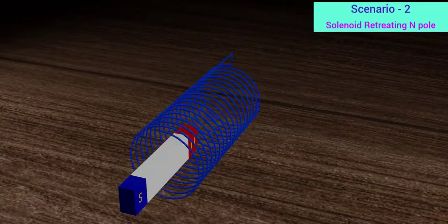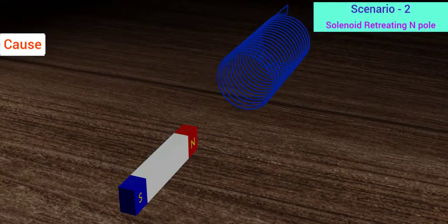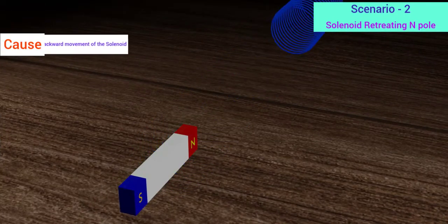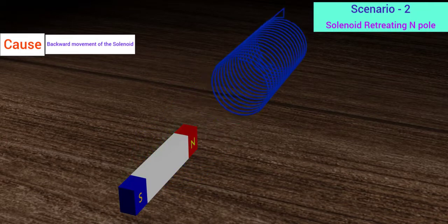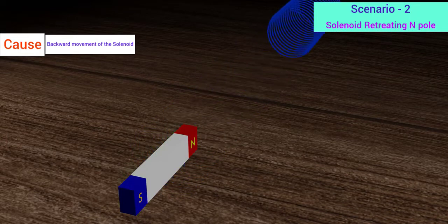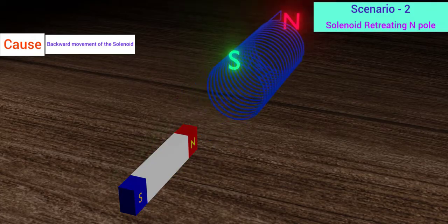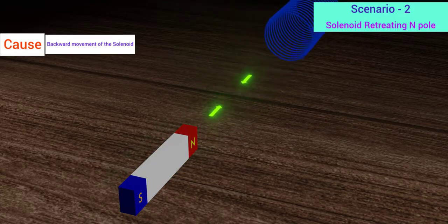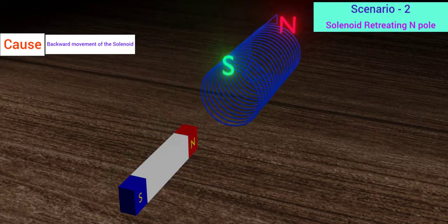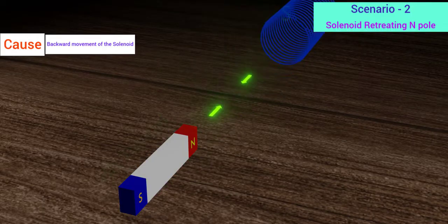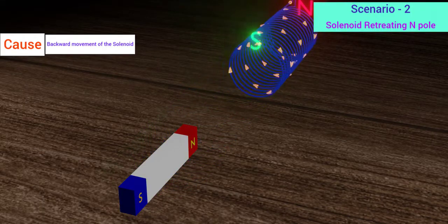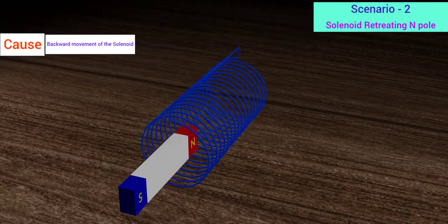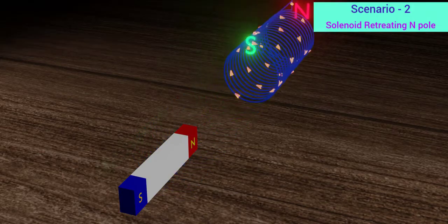Now check the second situation. Here the cause of generation of the induced current is the retreat of the solenoid. To counter its movement, an attraction force should arise between the magnet and the solenoid. To do so, the solenoid should create a south pole near the magnet. And to produce a south pole, it should generate a clockwise current. Hence the current should be clockwise in this occasion.